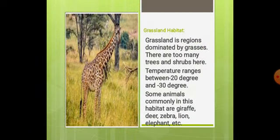The next type of habitat is grassland habitat. Grassland regions are dominated by grasses with fewer trees and shrubs. Temperature ranges between 20 and 30 degrees Celsius. Some animals commonly found in this habitat are giraffe, deer, zebra, lion, elephant, etc.